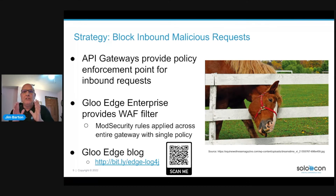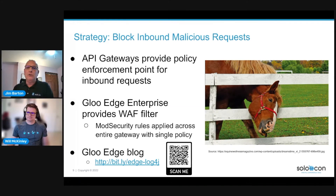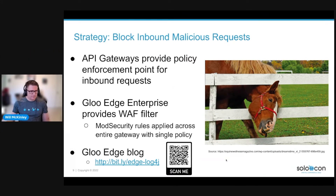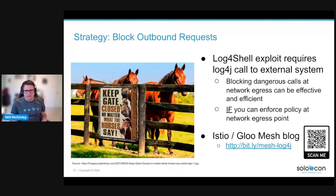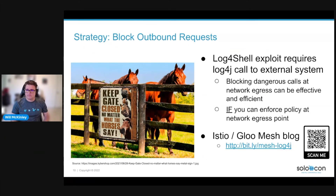I'll pass the baton to Will McKinley to discuss an alternative approach for blocking Log4Shell attacks using Glue Mesh. Jim did a great job explaining this exploit and how to prevent it at the ingress point. What I'd like to focus on is that this Log4Shell exploit had been sitting there for a long time before it was discovered, and it's not going to be the last one you encounter. These exploits can be pervasive, and we need strategies to mitigate them from taking effect within your clusters and systems — in effect, we want to keep the horses in the corral.